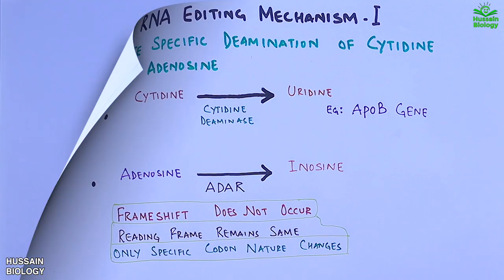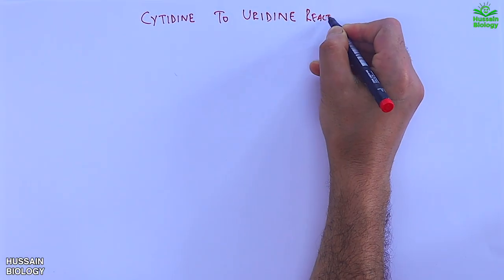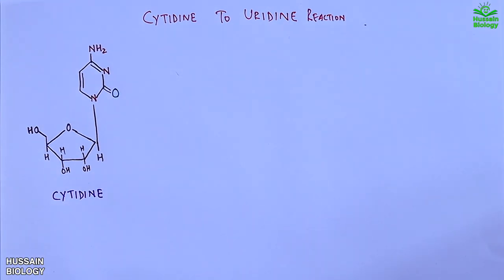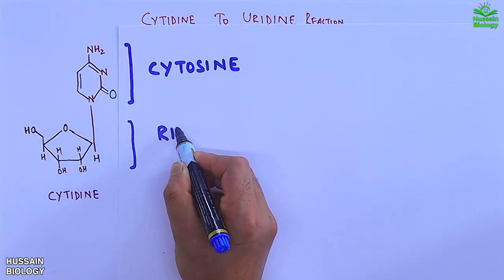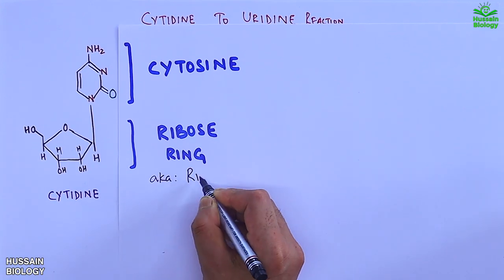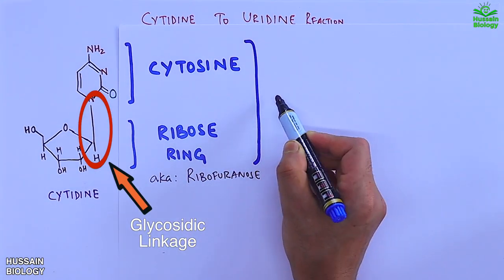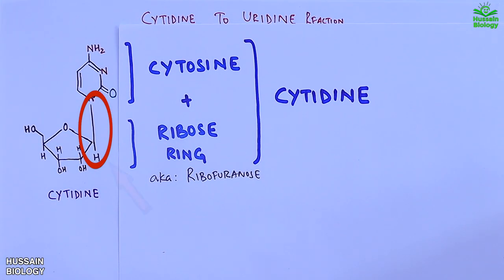Now first of all let's get to the cytidine to uridine reaction. In this diagram we have the cytidine molecule. This part is the cytosine part and the lower one is the ribose ring, aka ribofuranose. Both these structures are combined together by glycosidic linkage that forms the cytidine molecule which is a nucleoside.